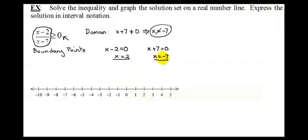That is another boundary point. This might look a little confusing because up here I said x cannot equal negative 7. Well, x equals negative 7 is a boundary point because that is a point at which this inequality can change from true to false. Points that are not in the domain can cause the inequality to change from true to false. So I have these two boundary points and I need to graph them on the number line.